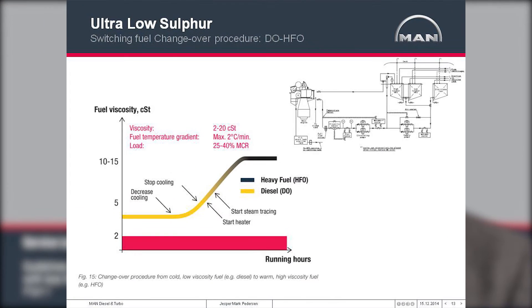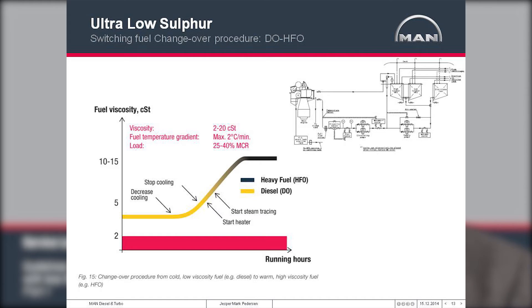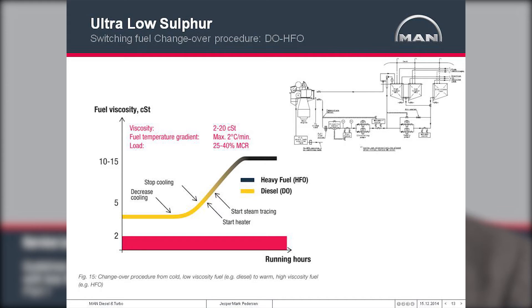During this switch, you cannot increase the temperature by more than two degrees per minute. If you do so, there is a risk that the clearance inside the fuel pumps between the plunger and barrel becomes too small, and they will start to seize and eventually stick. It is therefore important to keep to two degrees per minute to make sure that this doesn't happen.